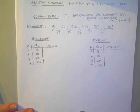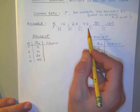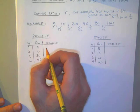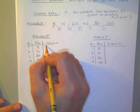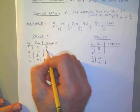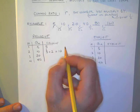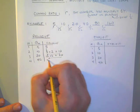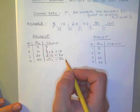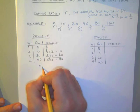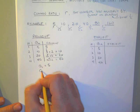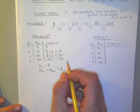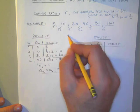Let's write a recursive formula for this geometric sequence, and then when we're done, we'll write a general formula for all geometric sequences. In this case, we're starting out with 5, and then we take that previous term and multiply by 2 to get the next term, and so on and so forth. So our recursive formula is going to be: the first term equals 5, and then the next term is going to equal the previous term times 2.